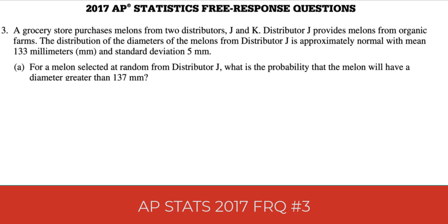Let's talk about 2017 free response question number three for AP Stats. We have a distribution here, it's normal, an approximately normal distribution. We have to look at a mean of 133, standard deviation of 5.